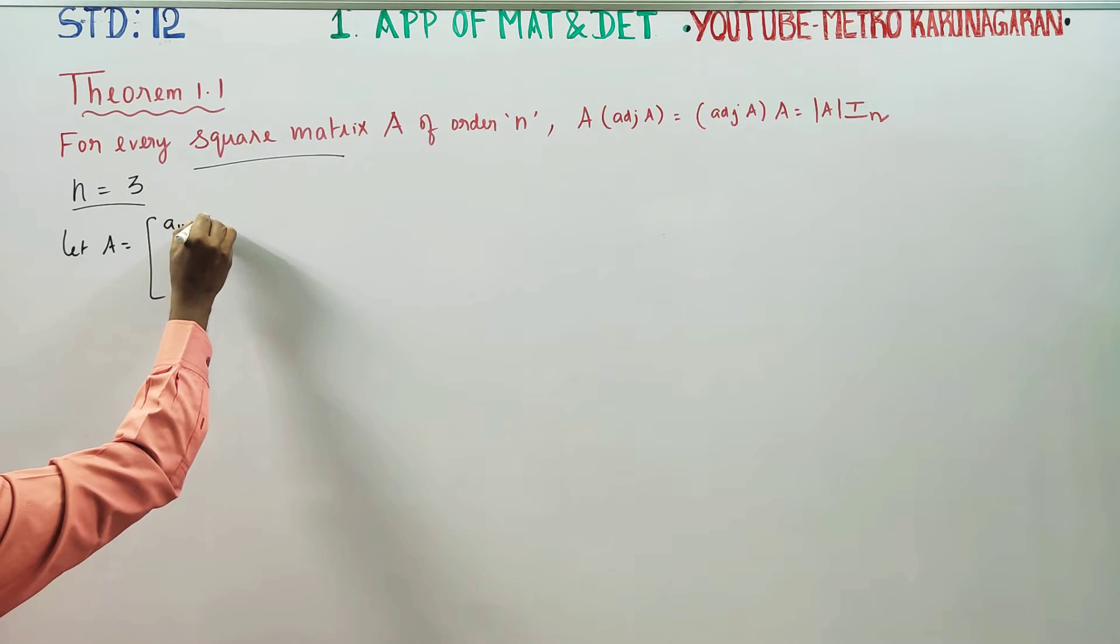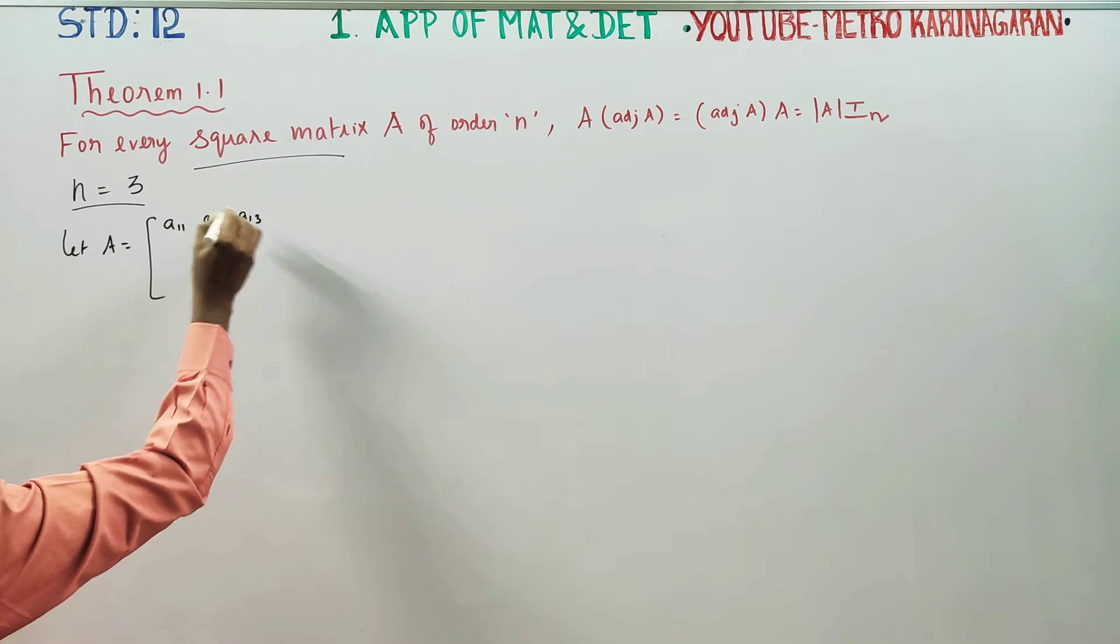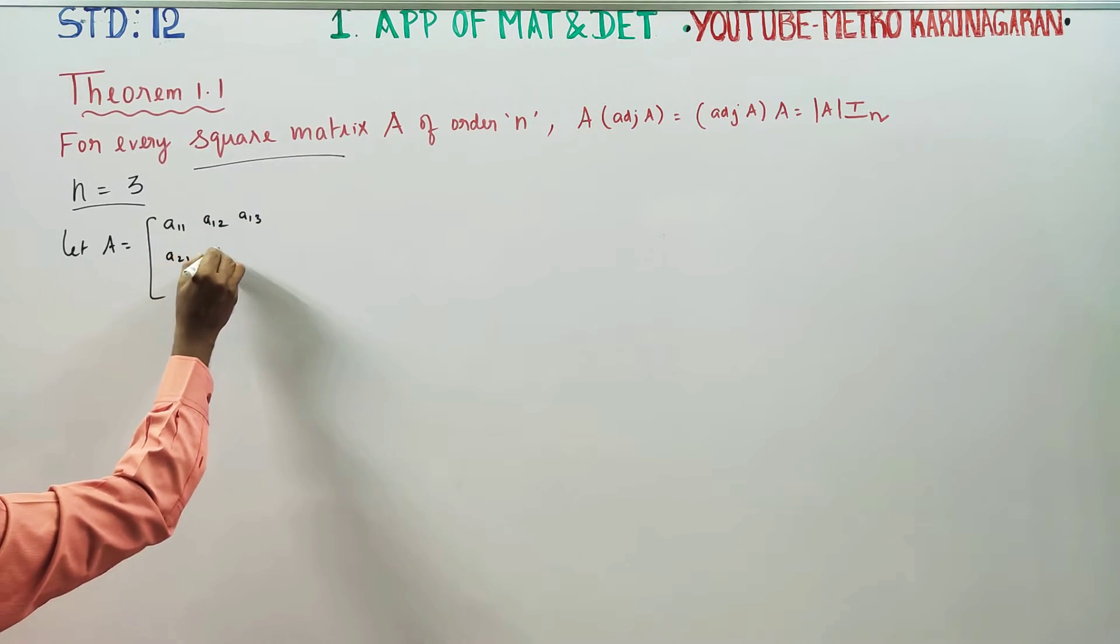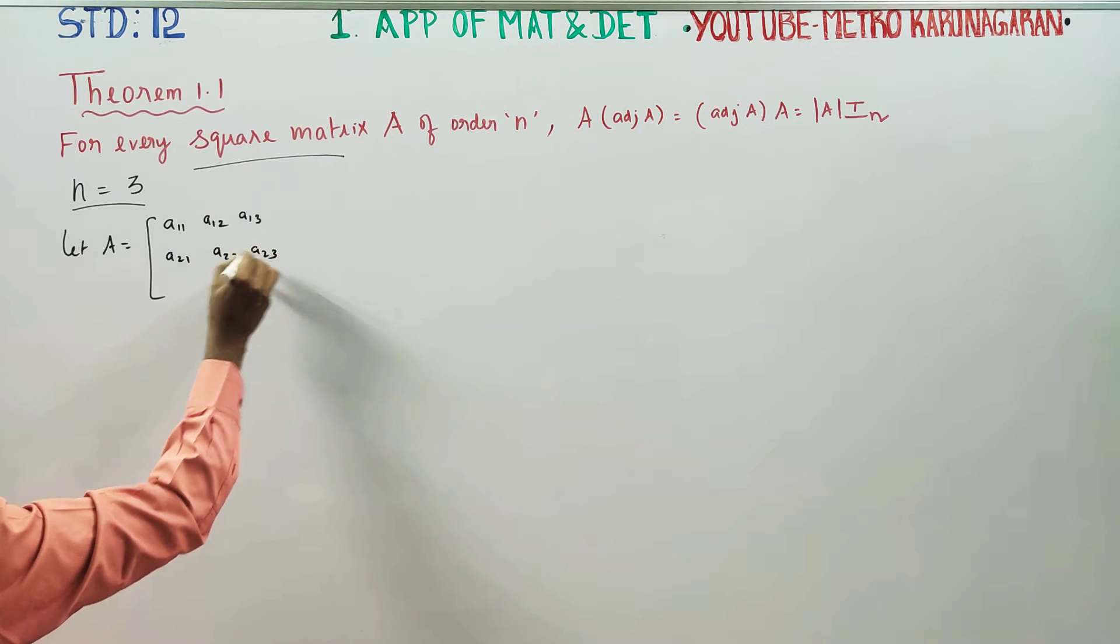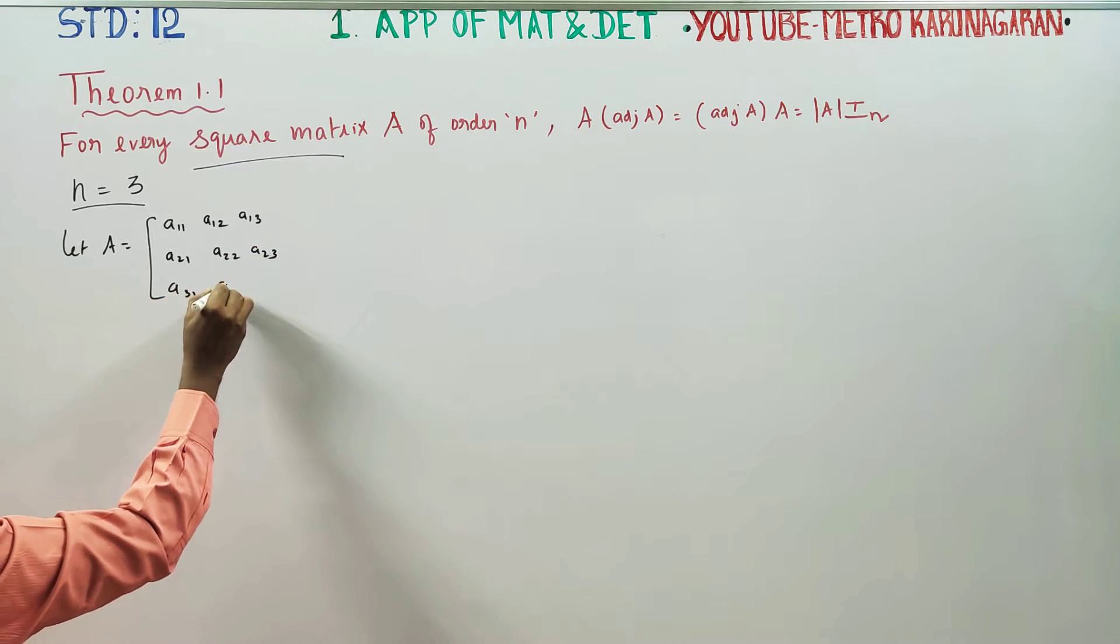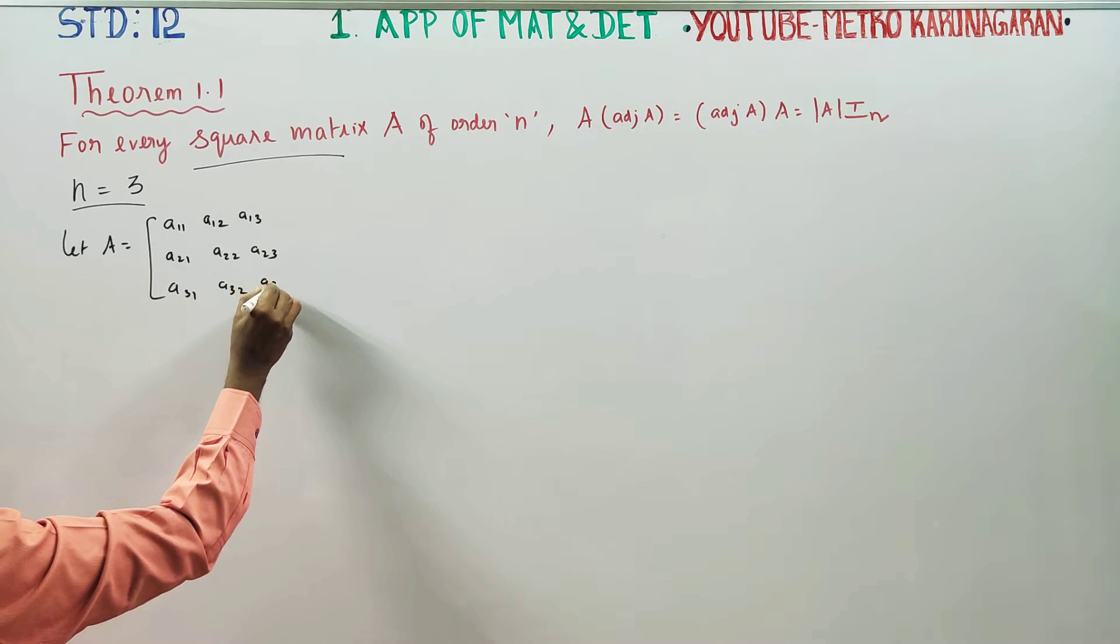First row: a11, a12, a13. Second row: a21, a22, a23. Third row: a31, a32, a33.